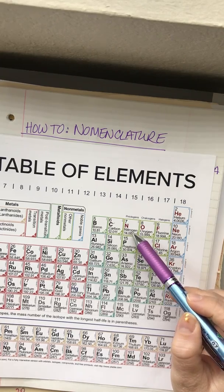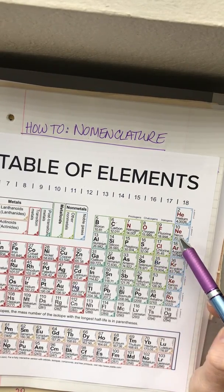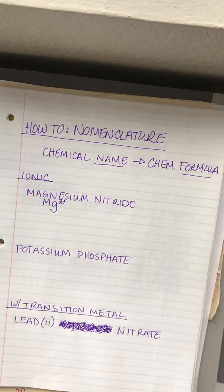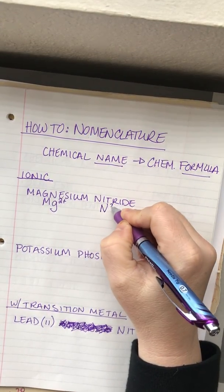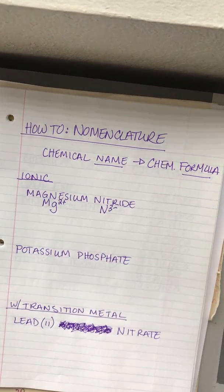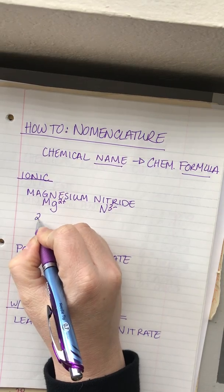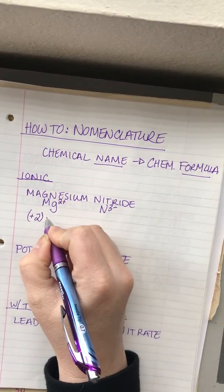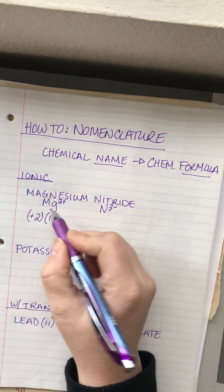Nitrogen needs one, two, three extra electrons to get to the noble gas configuration, so it will have a negative 3 charge.